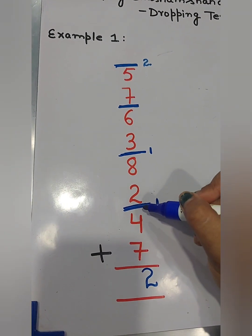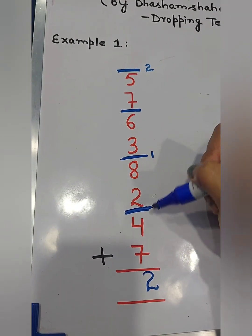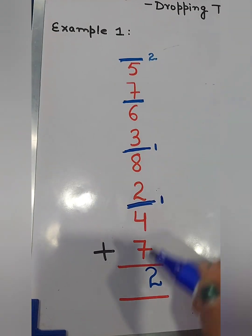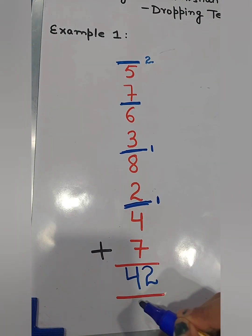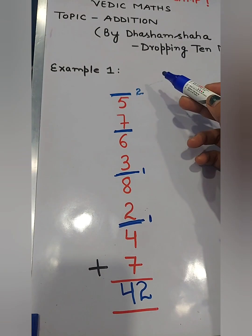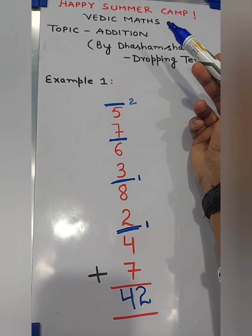Now see how many times you drop 10. कितनी बार अपने 10 को छोड़ा था? 1 time, 2 time, 3 time, 4 time. So write here 4. 4 tens. We get 42. This is oldest method of calculation. How to add by in Vedic Maths?